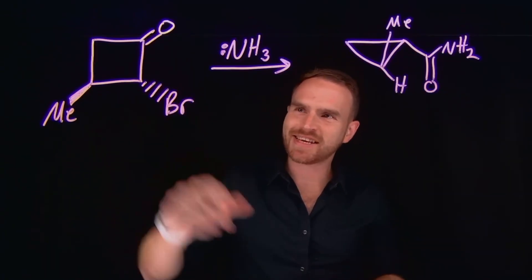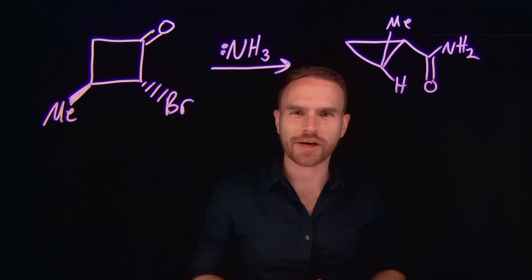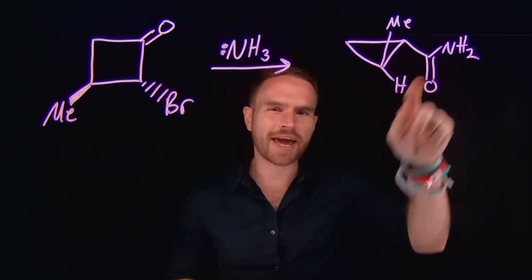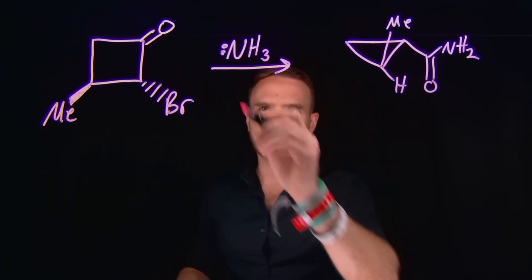In this reaction, we're taking this cyclic ketone, heating it in the presence of ammonia, and it rearranges to form this ring-contracted cyclopropyl amide. The first step in this reaction is going to be that ammonia will come and attack the carbonyl carbon,